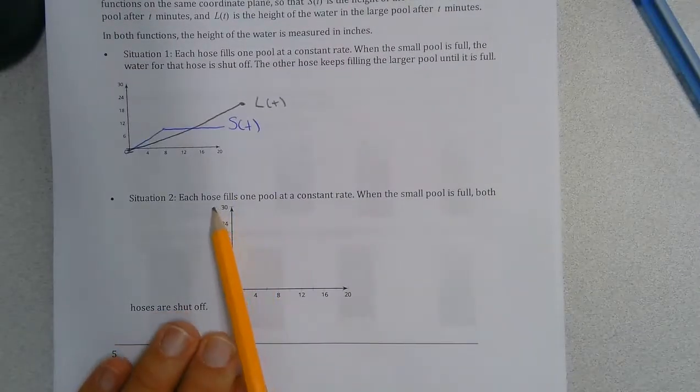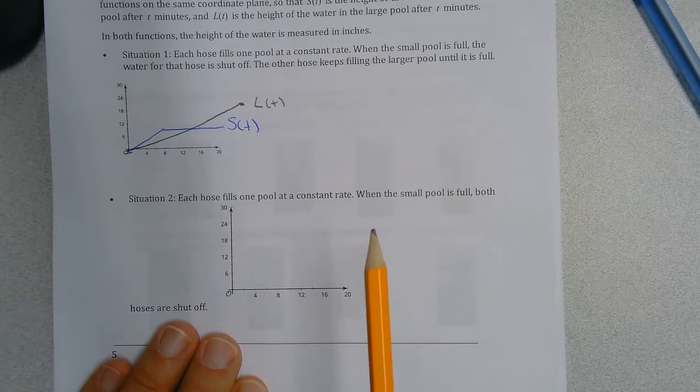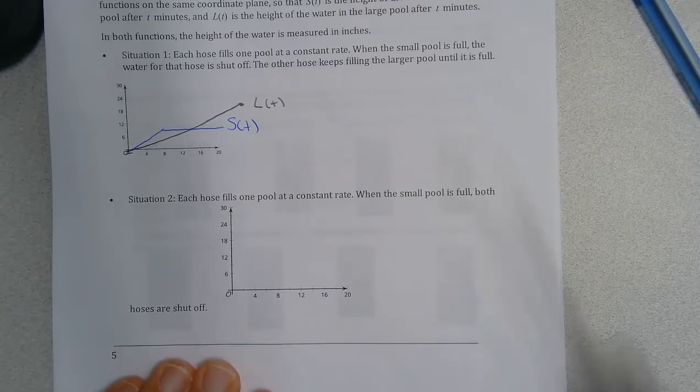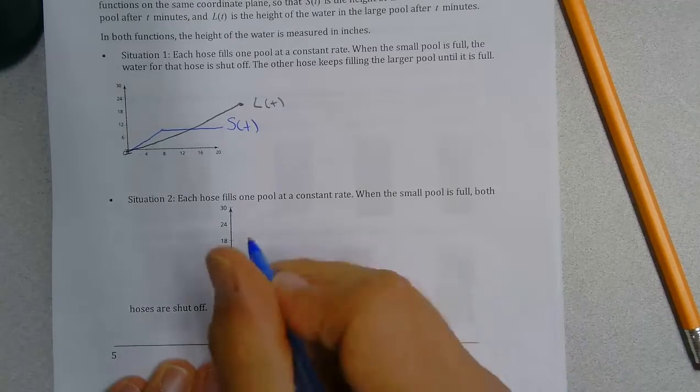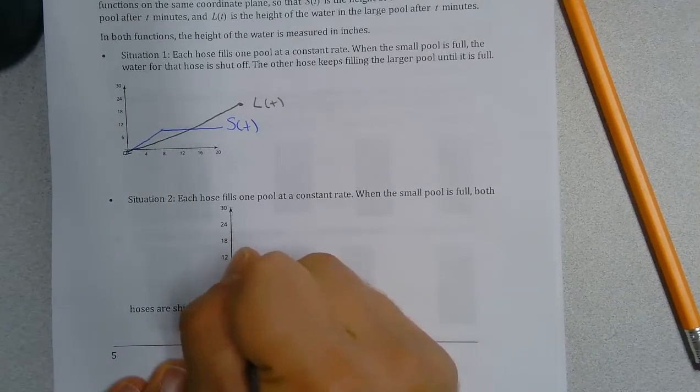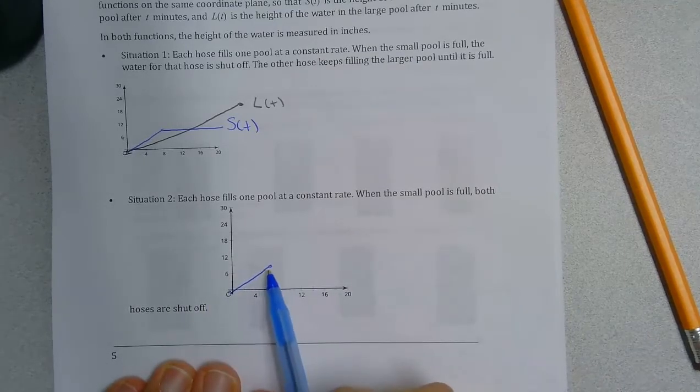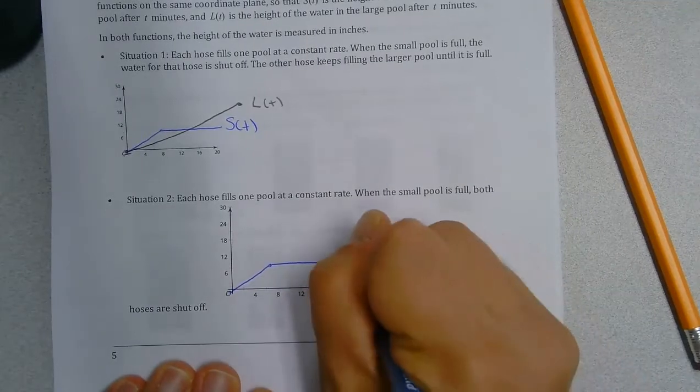Situation two: each hose fills one pool at a constant rate. When the small pool is full, both hoses are shut off. To describe that, we would have our same kind of graph here where the hose is shut off. This would be S of T.